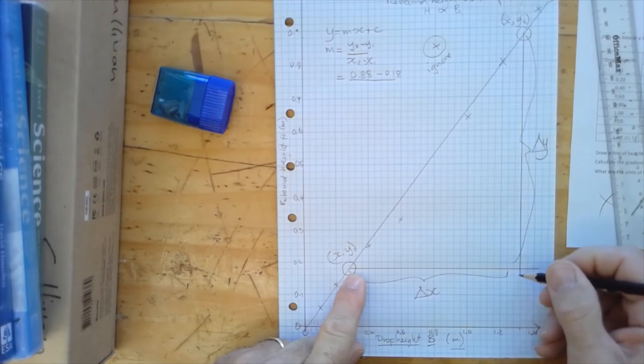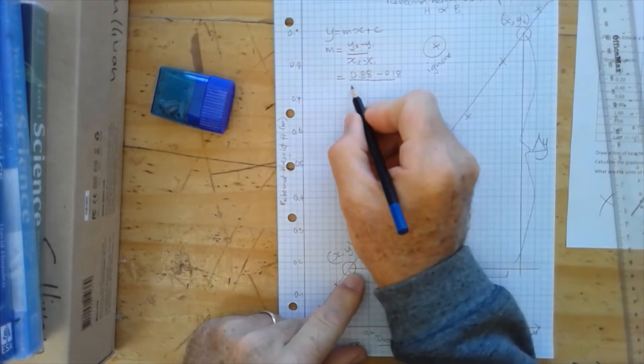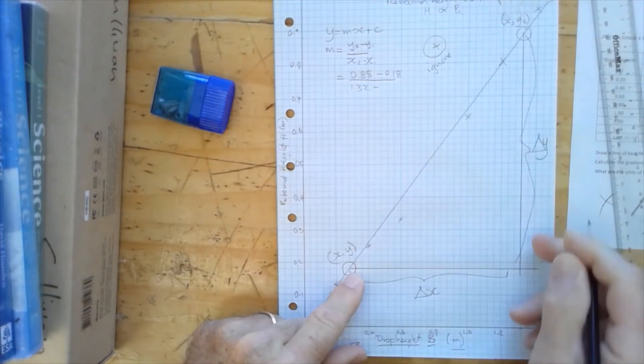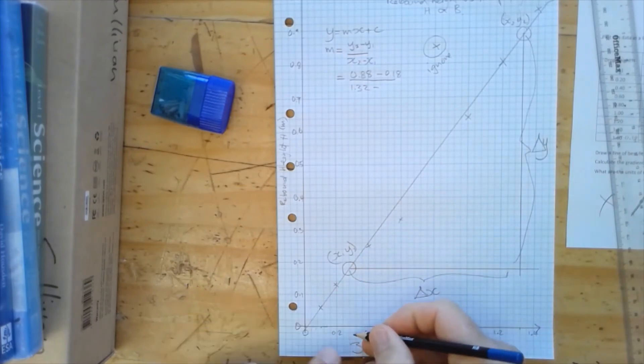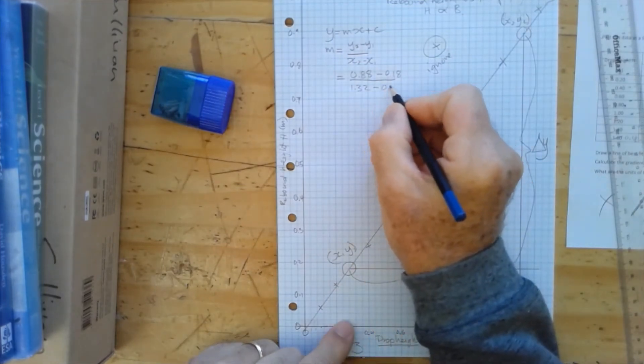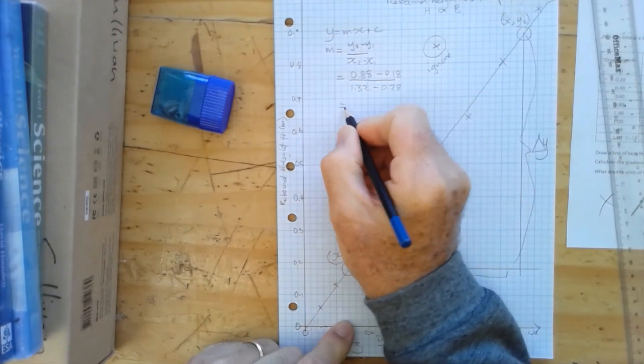0.88, so this length is 0.88. So this length is 0.88 minus 0.18 divided by this length here, which is x2, 1.32, minus this x value, which is 0.28. And that's equal to...